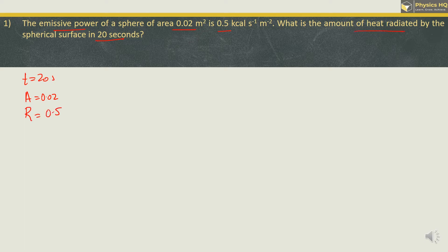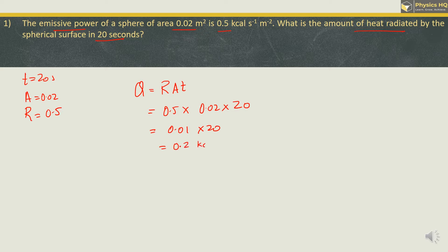We are supposed to find the amount of heat radiated, which is given by the formula Q = R·A·T. Putting in all the values: R is 0.5, A is 0.02, and time is 20 seconds. When we multiply this we get 0.5 × 0.02 × 20, which gives us 0.2 kilocalorie. So the amount of heat radiated is 0.2 kilocalorie.